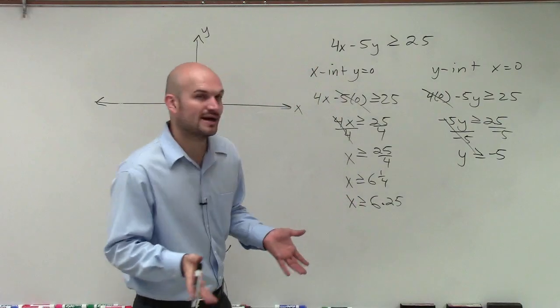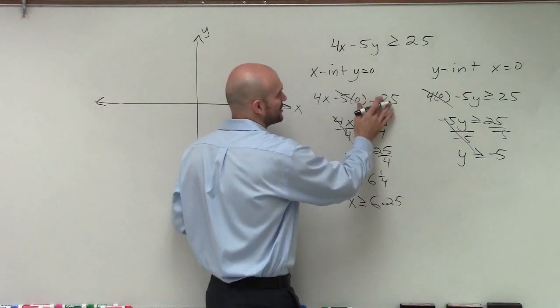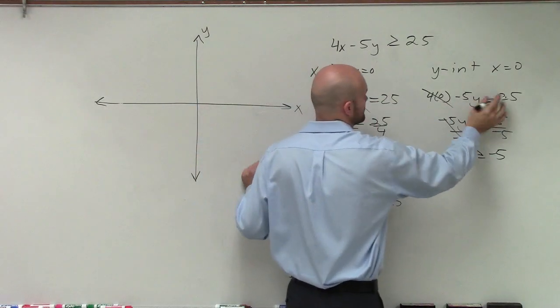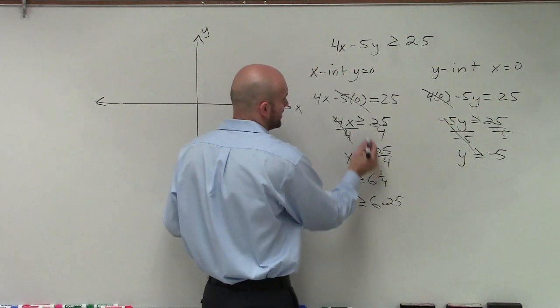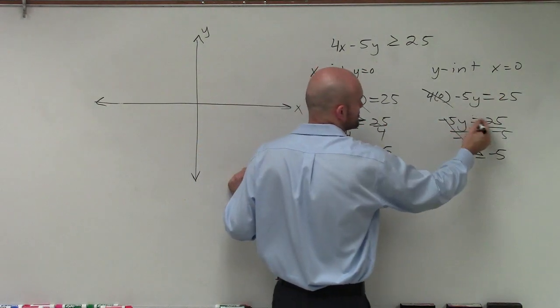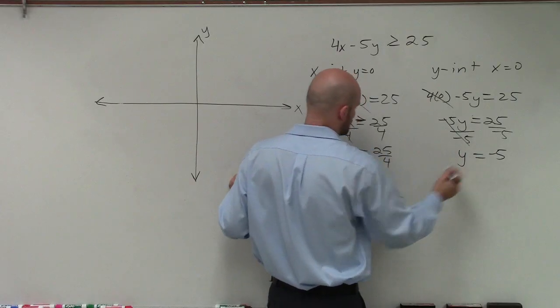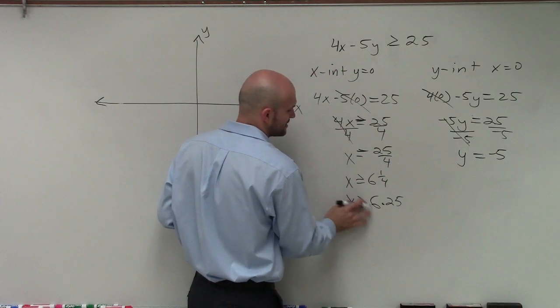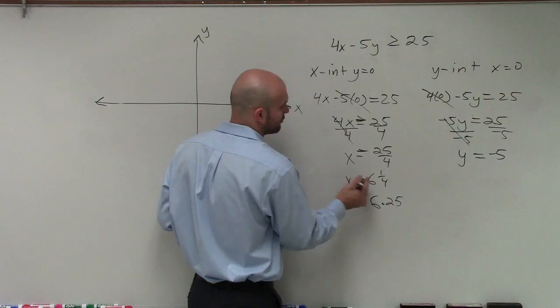However, when solving the x and y intercepts, we're not really going to be concerned what the sign is. We're going to show that by using a test point. So I don't even really want to even confuse you so much with that, because what we're going to do is we're going to use a test point to determine where we shade.